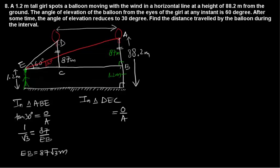In triangle GEC, opposite is 87 and adjacent is EC. Tan 60° = √3 = 87/EC. Cross multiply: √3·EC = 87, so EC = 87/√3.